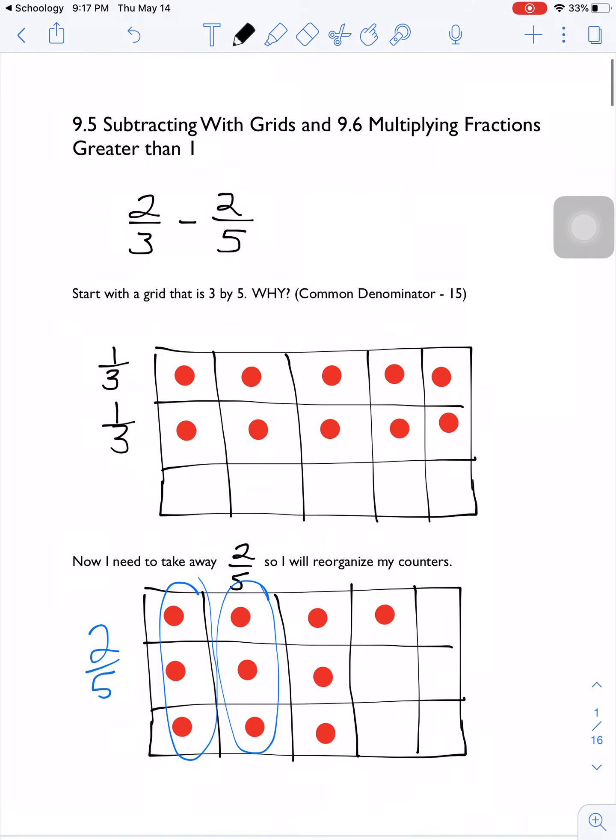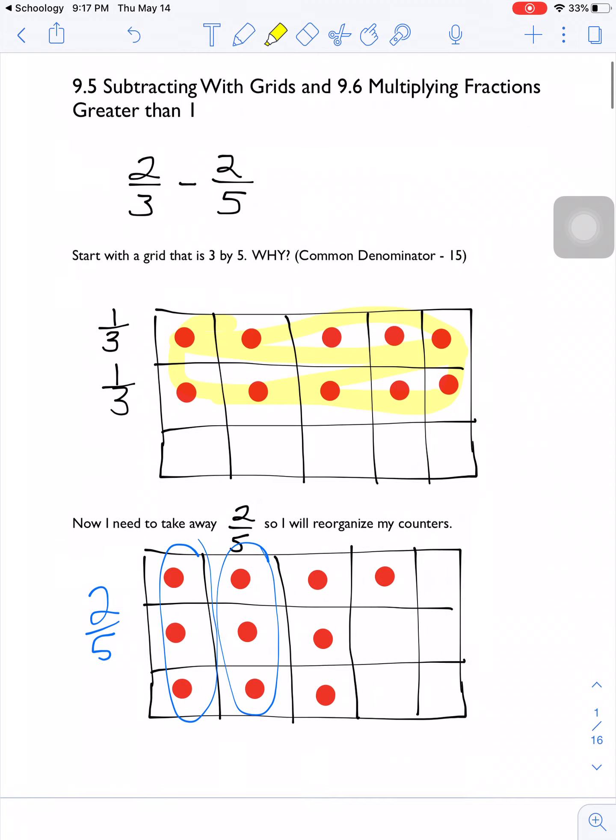Let's look at some subtracting fractions first. With adding and subtracting fractions, we have to find that common denominator. So here we have 2/3 minus 2/5. In thirds and fifths, we have to find that lowest common denominator, so we make a grid that has 15 sections. I'm showing 2/3 in my first grid, so I'm filling out 2 rows out of 3 with red dots. That's showing 2/3.